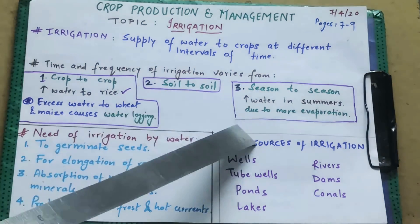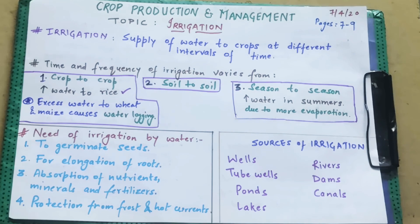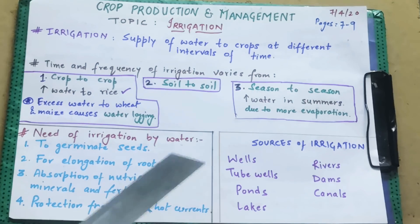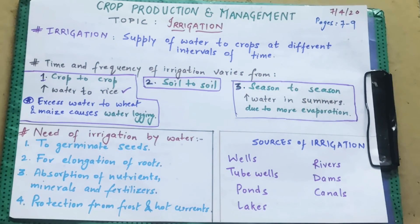अब बात करते हैं sources of irrigation — पानी आता कहाँ-कहाँ से हमारी crops के लिए। Wells — कुएं से। Tube wells — आपने देखा होगा, pipeline होती है, उनको खोल देते हैं तो खेतों में पानी चला जाता है, बंद करते हैं तो रुक जाता है। Third है ponds — छोटी-छोटी water bodies होती हैं खेतों के पास। फिर है lakes — ponds से बड़ी water body, जैसे झील।